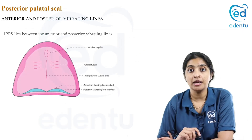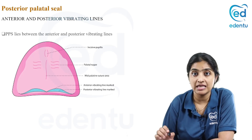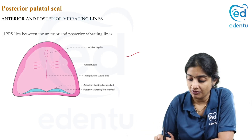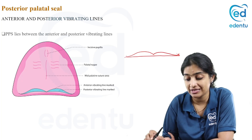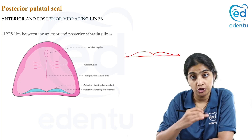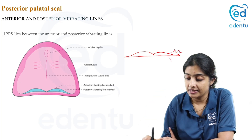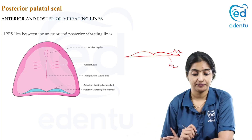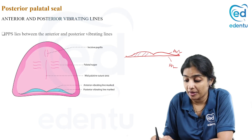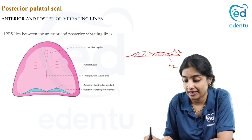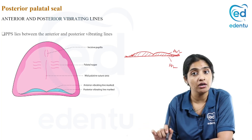Coming to the anterior and posterior vibrating lines. Ideally, the PPS is in a cupid's bow shape. The outer curve of the cupid's bow is the anterior vibrating line, and the inner portion is your posterior vibrating line. The PPS lies between the anterior vibrating line and the posterior vibrating line — so the area that falls between these two lines is your PPS.